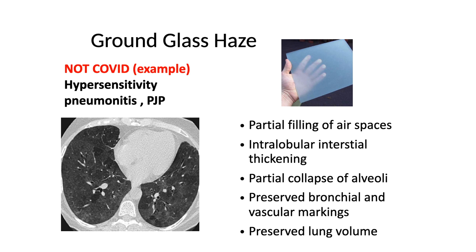Ground glass opacity has a translucent appearance — not completely transparent. In CT we can see spared regions completely black, representing normal lung tissue, interspersed with black and white granular densities that look translucent — these are your ground glass opacities. Causes include partial filling of air spaces, intralobular interstitial thickening, partial collapse of alveoli, and preserved bronchial and vascular morphology. Lung volumes are generally preserved.